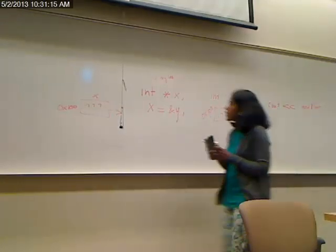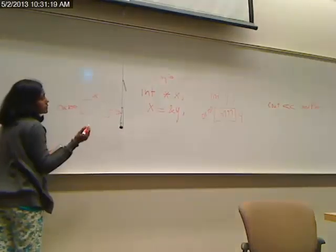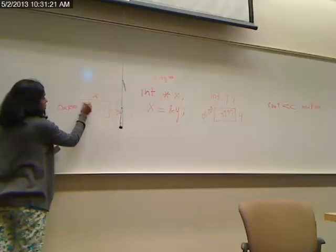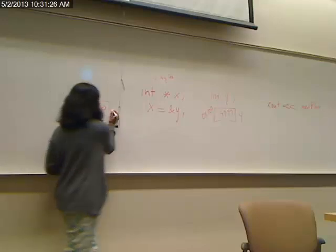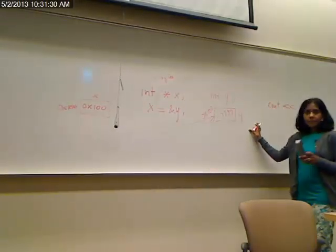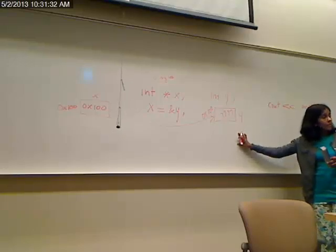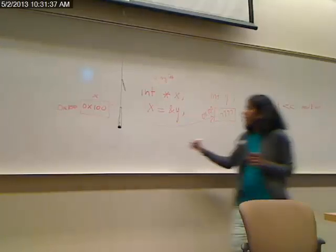So you take the address of y and you put it into x. So once that statement is done executing, what goes into this pointer? And that is 0x100. Once that goes in there, we have taken this pointer and made it point to y. Y still doesn't have anything. Y still has junk in it because we still haven't put anything in y.